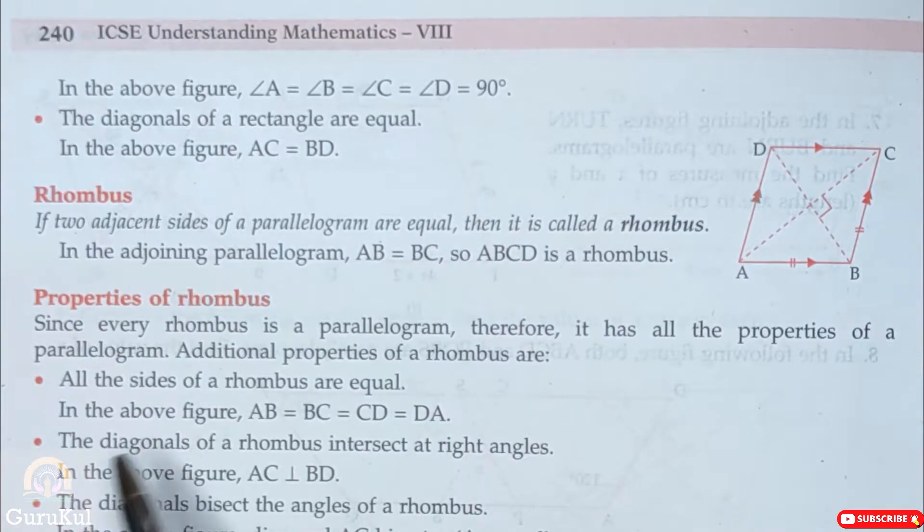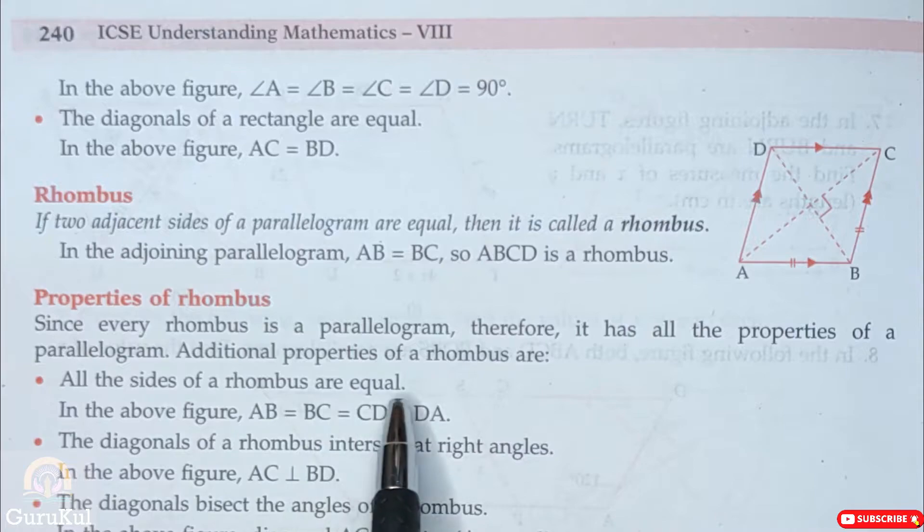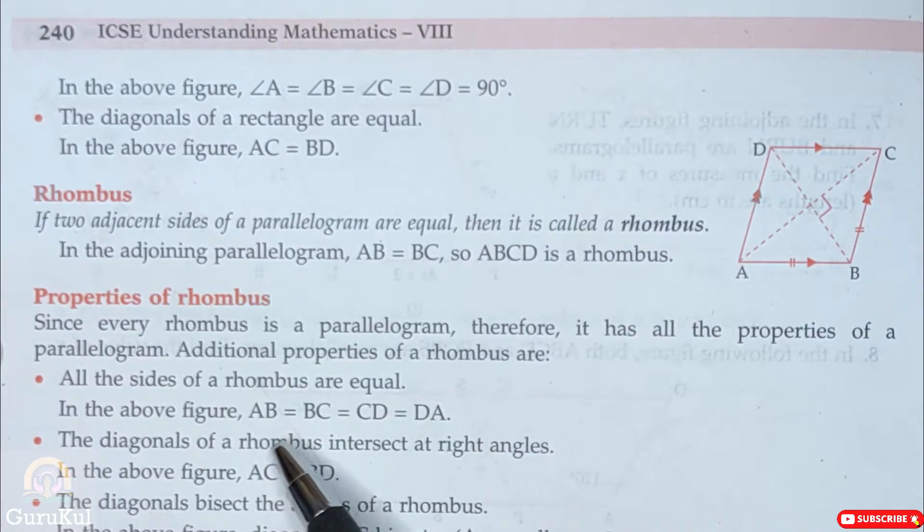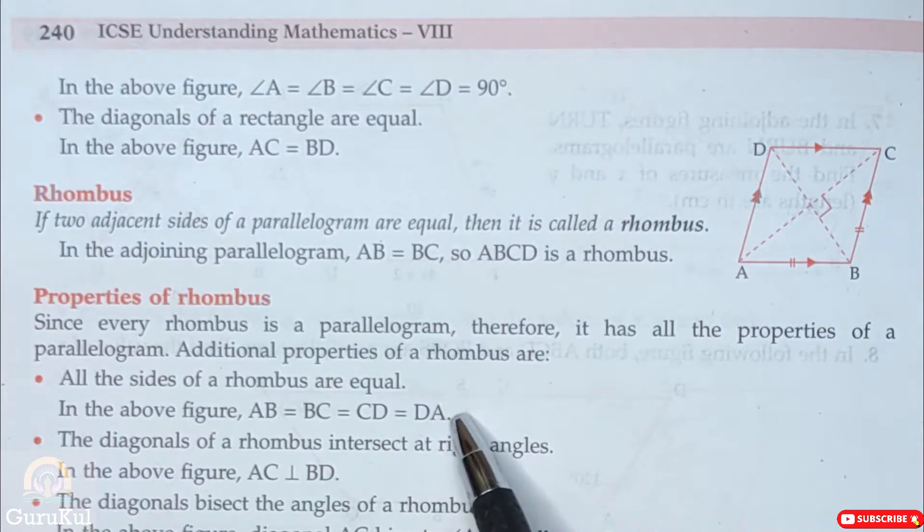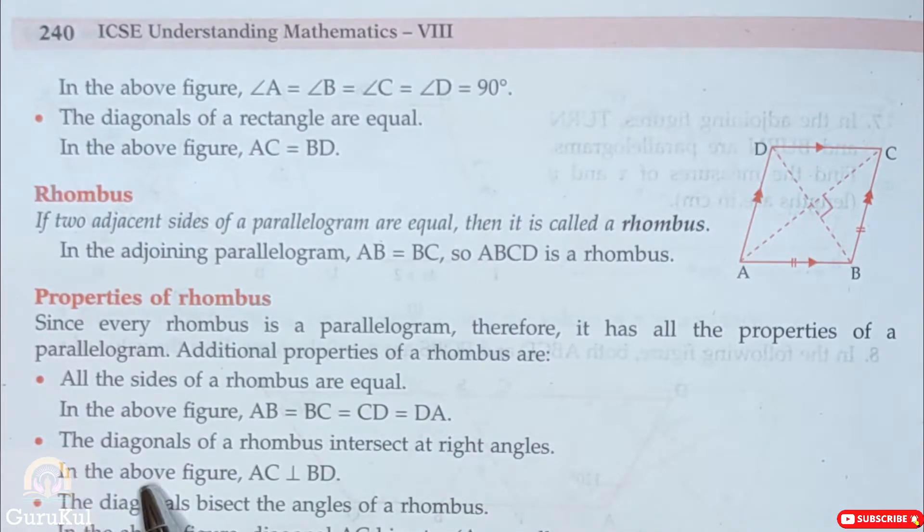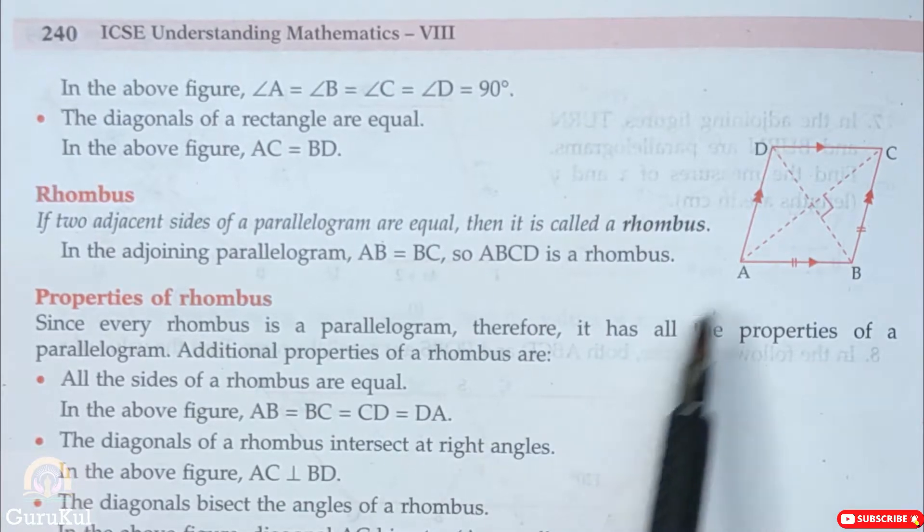Now let's read its properties. First one, all the sides of a rhombus are equal. So AB is equal to BC which is equal to CD and DA. Next property, the diagonals of a rhombus intersect at right angles. As you can see in the figure that AC is perpendicular to BD. That means 90 degree.